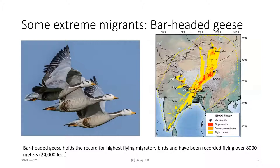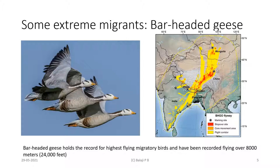Another extreme migrant is the bar-headed goose, which is extreme because it's known to fly over the Himalayas. It normally breeds in Mongolia and parts of China, then winters in India — we've seen them in Walayar Lake and Nanjarayan Tank in Tirupur. The amazing fact is this bird is capable of flying over 8,000 meters — eight kilometers above sea level. Some people claim it has flown over Mount Everest, though we don't have enough evidence. We know for sure they are capable of flying over 24,000 feet.